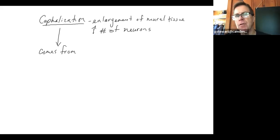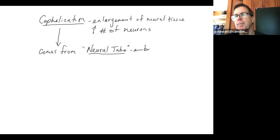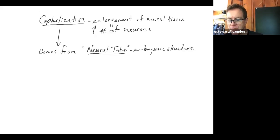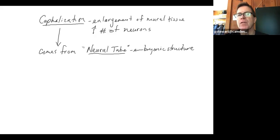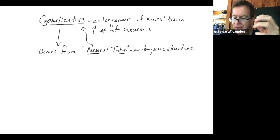All neural tissue in mammalian development basically comes from something called a neural tube. When we are first developing as embryos, neural tissue embryologically develops first into the neural tube, which is a hollow structure. It's an embryonic structure — really the derivation of nervous tissue, the first structure made of nervous tissue — and it's what the brain and the spinal cord developed from.